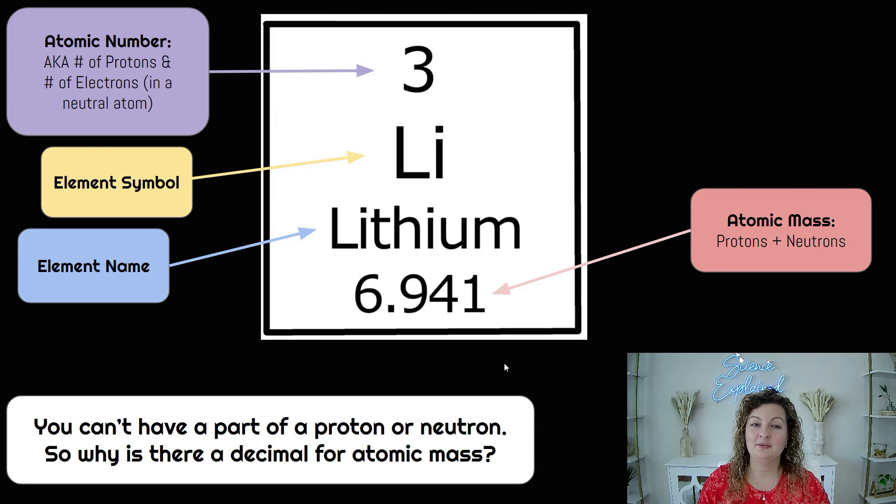Let's review really quickly our square of the periodic table. We have our atomic number, which is our protons and electrons in a neutral atom, our symbol, our name, and the bottom is the atomic mass.